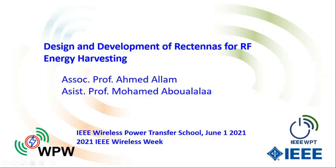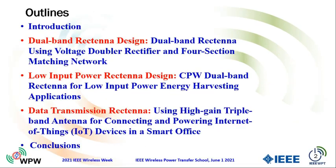This is the energy harvesting part prepared by Associate Professor Ahmad Alim and Demi. I am Hamad Al-Ala. Our outline is: firstly, a brief introduction about energy harvesting. Then we will highlight some of our rectenna designs. The first design is a dual-band rectenna using a four-section matching technique. After that, the design for low input power operation. Then a rectenna for data transmission is introduced using a high-gain triple-band antenna for connecting and powering Internet of Things devices in a smart office. Finally, the conclusion.